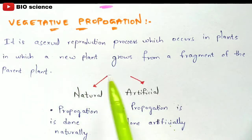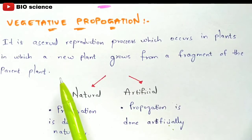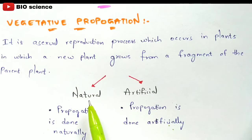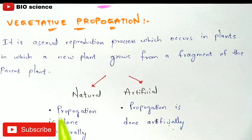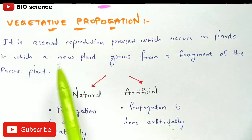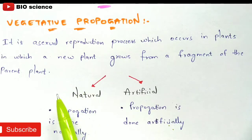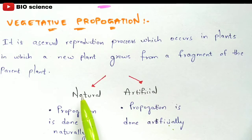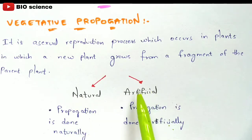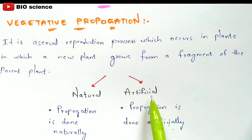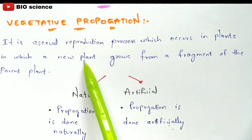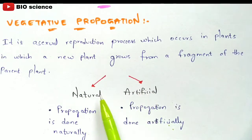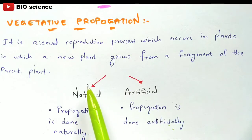Vegetative propagation can be divided into two types: natural vegetative propagation and artificial vegetative propagation. In natural vegetative propagation, the new plant grows from the parent plant naturally, without any involvement of human beings. In artificial vegetative propagation, human beings are required to do some work upon the parent plant to generate a new plant.